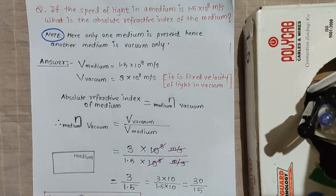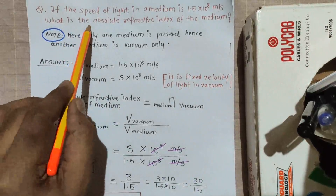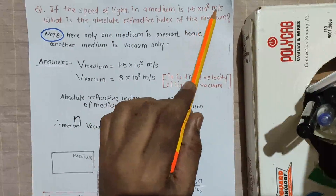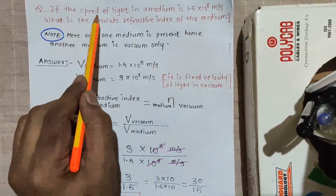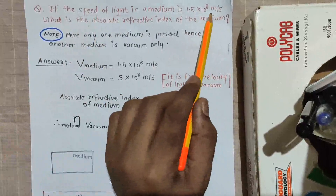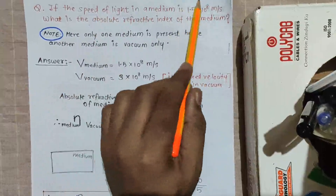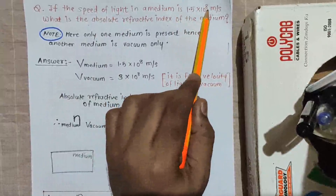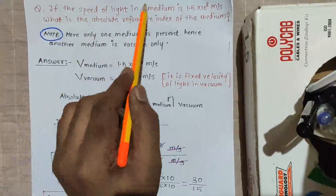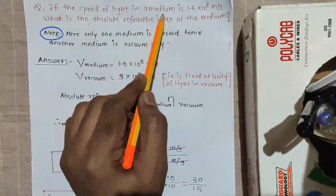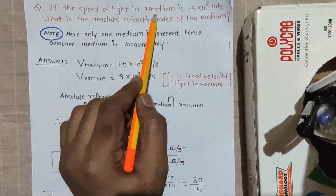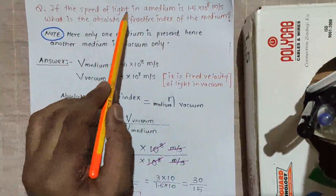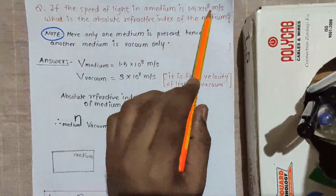In this example, if the speed of light in a medium is 1.5 × 10⁸ meters per second — we always calculate the speed of light in meters per second — the speed in this medium is given as 1.5 × 10⁸ m/s. The medium can be anything; let's consider this is water.